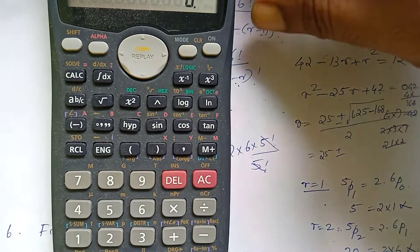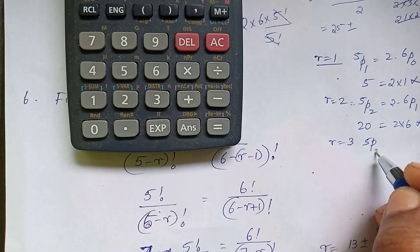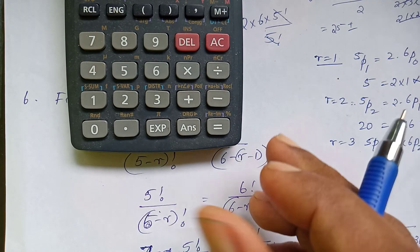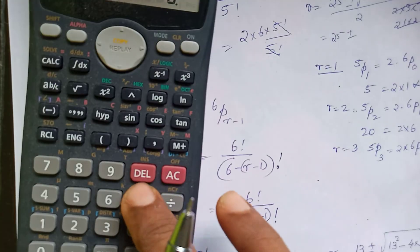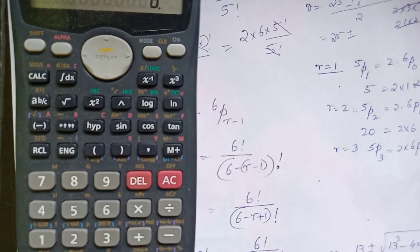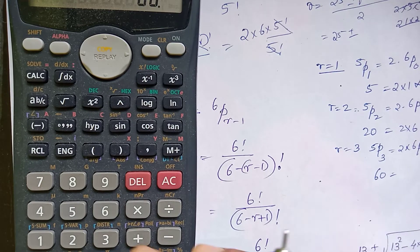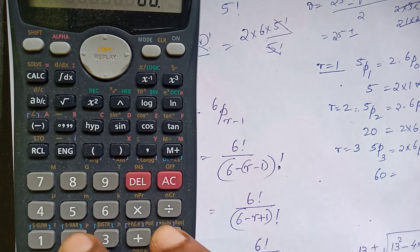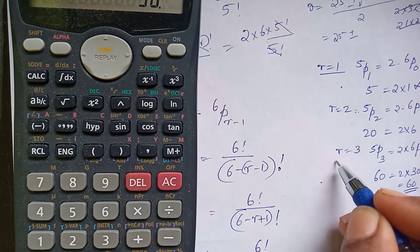Next: 5P3 equals 2 into 6P2. Checking 5P3 against 6P2 and 6P3. Then testing 5P3 with 6P2, then 6P3, and finally 8P3.